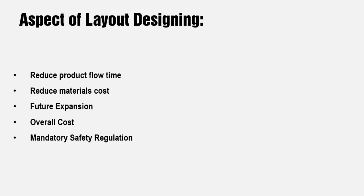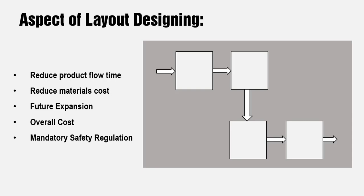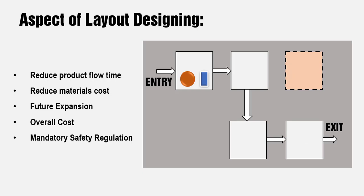Here are a few more points on which the layout is actually designed. Reducing the product flow time — in a process plant there will be multiple units, each with a specific role. The product enters from one location and exits from another, and we should plan the entire product flow so it does not run back and forth but passes through a minimum passage, reducing production time. By doing so, you save material cost. Another aspect is future expansions — generally 20 to 30 percent of future space is planned during any process plant layout designing.